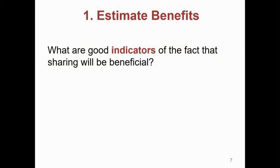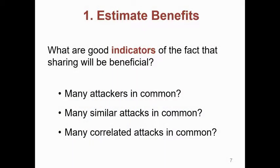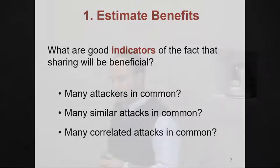The first step is estimating the benefits. The question from a research point of view is how do we estimate what are good indicators — what kind of metrics we can run to understand whether or not sharing will be beneficial. Common things you could think of: if we have a lot of attackers in common, or if we are attacked in similar ways, or our attacks are correlated with each other, that may be a good indication that sharing would be useful.